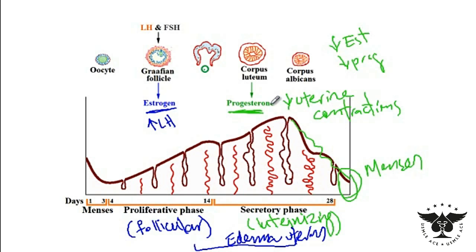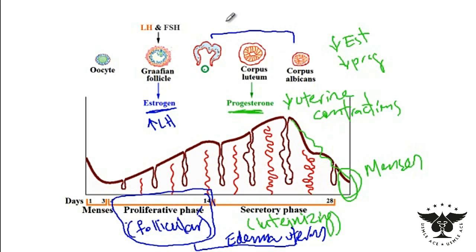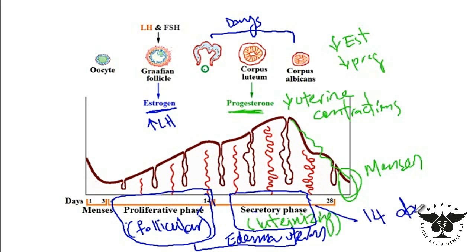One other point to mention is that the proliferative phase is variable in different individuals — it can be around three weeks in some individuals or one week in others, so the duration can vary. However, since the lifespan of the corpus luteum is fixed in terms of days, the secretory phase is always fixed at 14 days.